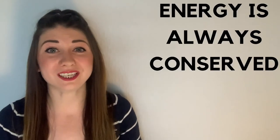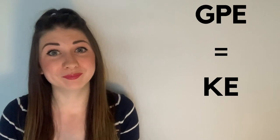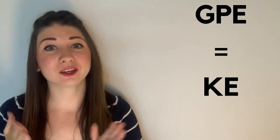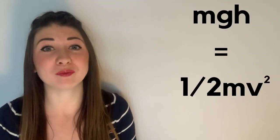And the last thing you need to know is that because energy is always conserved, the gravitational potential energy at the top will be equal to the kinetic energy at the bottom. So yeah, due to the conservation of energy, GPE equals KE and therefore mgh equals half mv squared.